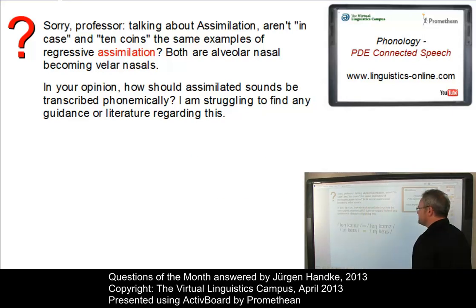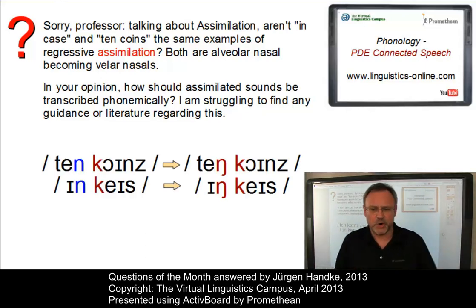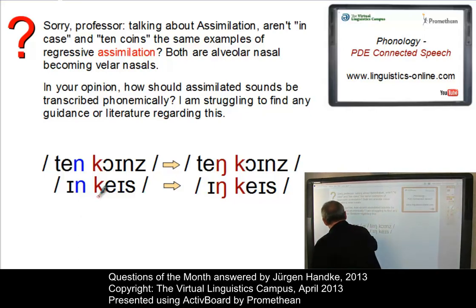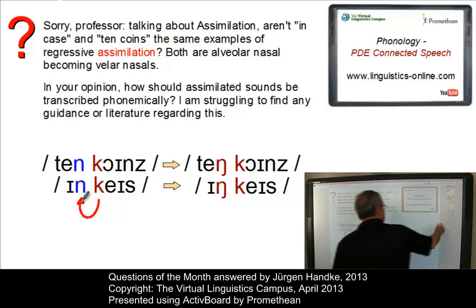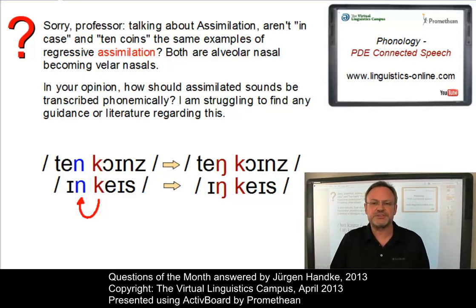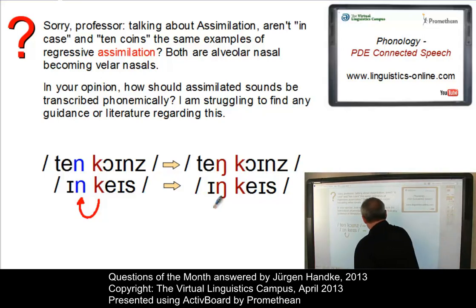The first question is relatively simple. It is true that in 'ten coins' and in 'in case' we have the same phenomenon — regressive assimilation — where an alveolar nasal is influenced by the consonant that follows, in this case a velar consonant, and under its influence is assimilated to a velar nasal. So in both cases we have the same phenomenon.